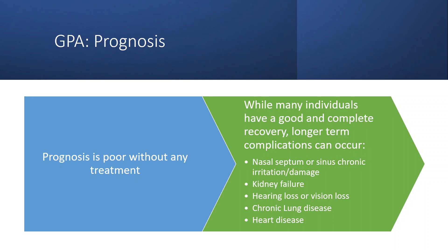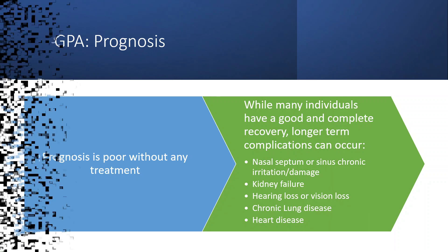Sometimes damage to the nasal septum can happen, or people may experience chronic sinus irritation. Kidney failure can occur if treatment isn't started quickly enough or isn't effective. Hearing loss or vision loss can occur, and you may end up with chronic lung disease or heart disease as well. This is clearly a very serious condition. Rheumatologists can be very effective at treating it, and the sooner we're able to treat it, the better. For more information on vasculitis, any rheumatic disease, or the treatment options discussed, please feel free to watch our other videos or visit our website at albertorheumatology.com.